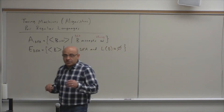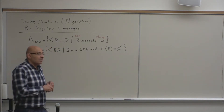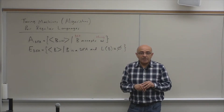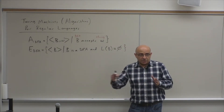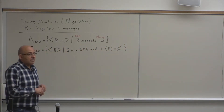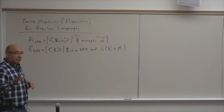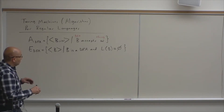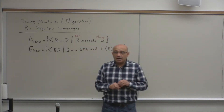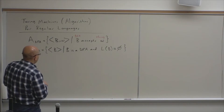The Turing machine is powerful enough to do anything a general purpose computer can do, or anything for which there is an algorithm. If there is no algorithm for a problem, you cannot do it using a computer, because an algorithm is just a step-by-step procedure for solving a problem. We will see examples of problems that cannot be solved using computers.